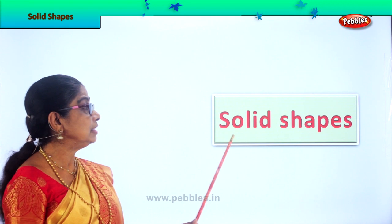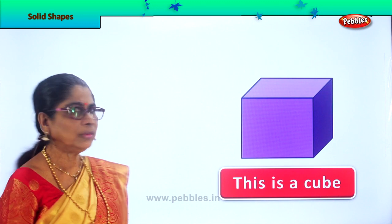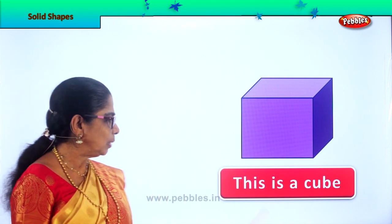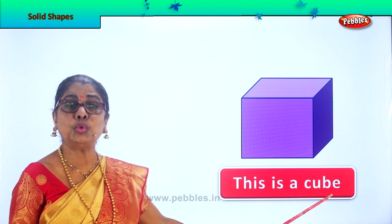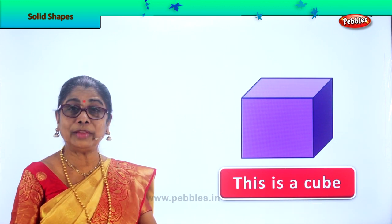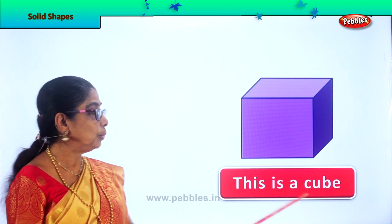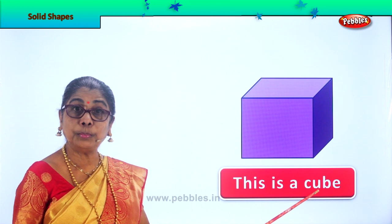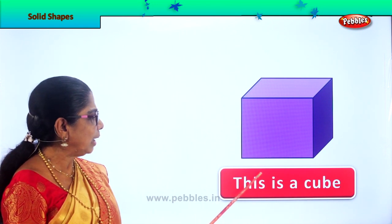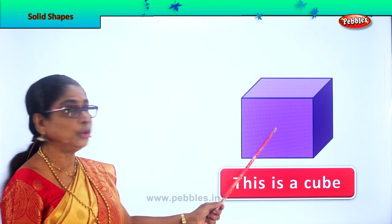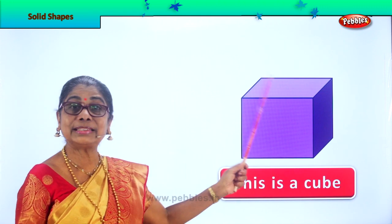Let us look at our first solid shape. And what is it? Look how colourful it is. Let us read what is here. This is a cube. I am sure you play with the cube. You have seen cube boxes in your house like this shape? Now let us look at it. This is a cube. Look, it is solid. Can you see? It is solid.